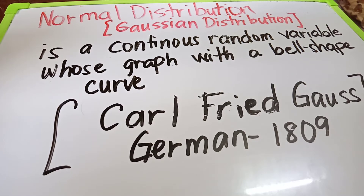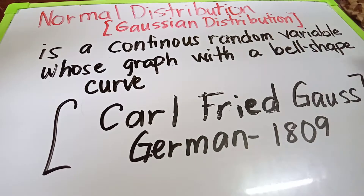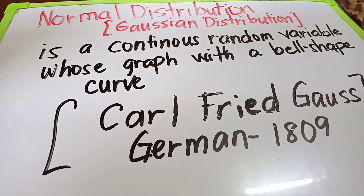Welcome to this YouTube channel. We will discuss the normal distribution, which is a continuous random variable whose graph forms a bell-shaped curve. Another term for normal distribution is the Gaussian distribution. It was developed by Carl Friedrich Gauss, a German mathematician, in the year 1809. Now let's look at the properties of a normal distribution and how to sketch it.